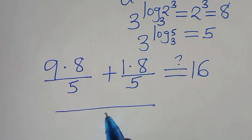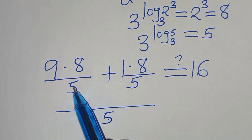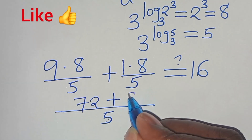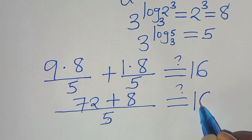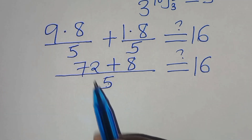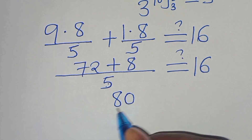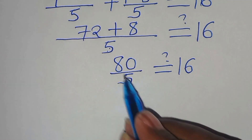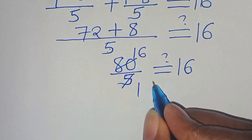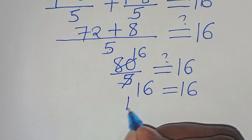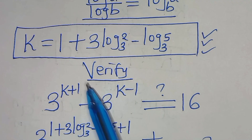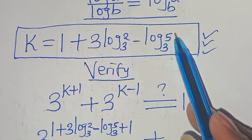The common denominator is 5. So we have (9×8)/5 + 8/5 = 72/5 + 8/5 = 80/5 = 16. This equals 16, confirming the left-hand side equals the right-hand side. Therefore k = 1 + 3·log₃(2) − log₃(5) satisfies the original equation.